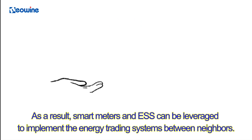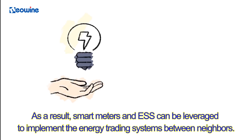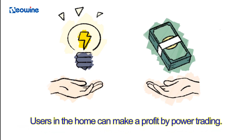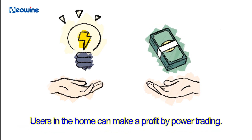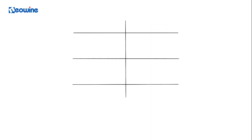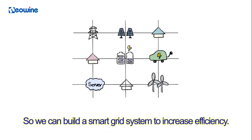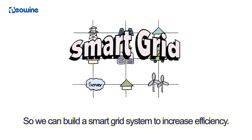As a result, smart meters and ESS can be leveraged to implement an energy trading system between neighbors. Users in the home can make a profit by power trading. In the process of producing and consuming electricity, suppliers and consumers interact with each other, so we can build a smart grid system to increase efficiency.